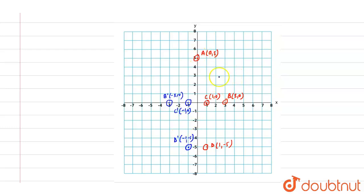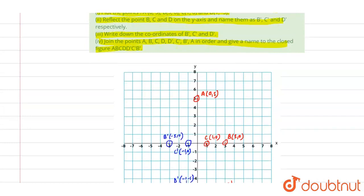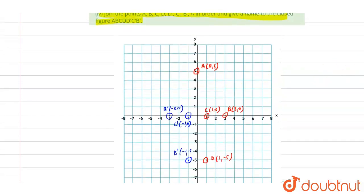We need to join the points A, B, C, D, D', C', B' and then A in this particular order. To join them, we use straight lines from A to B. Then from B to C. From C to D.